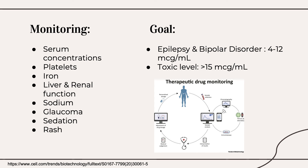Monitoring of carbamazepine levels can be a good idea in the first few weeks of therapy before a patient reaches steady state. Serum concentrations are typically drawn before the next dose is due. Other things to monitor include platelets, iron, liver and renal function, sodium, glaucoma, sedation, and rash. As a general goal for epilepsy and bipolar disorder, serum concentrations should be between 4 to 12 micrograms per milliliter, and the toxic level is anything that reaches above 15 micrograms per milliliter.